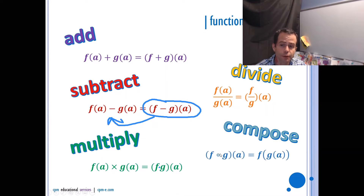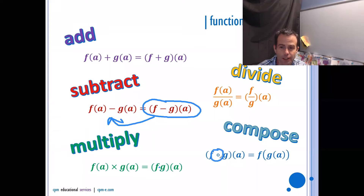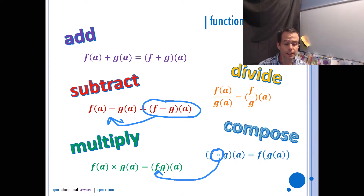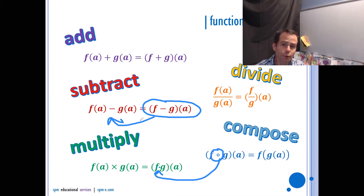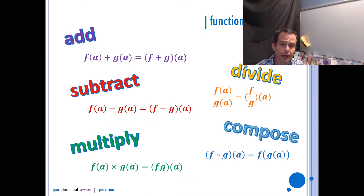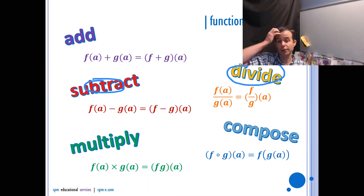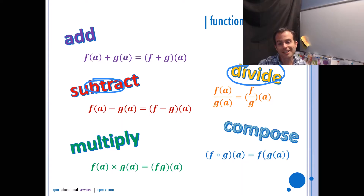Composition is written as f composed with g of a, using a non-filled circle. That's an important distinction: a non-colored circle means composition, a colored-in dot means multiplication — don't mix those up, they're entirely different. Also, questions are more likely to involve subtraction and division over multiplication and addition, because the order matters with subtraction and division — you've got to know who's first and who's second.